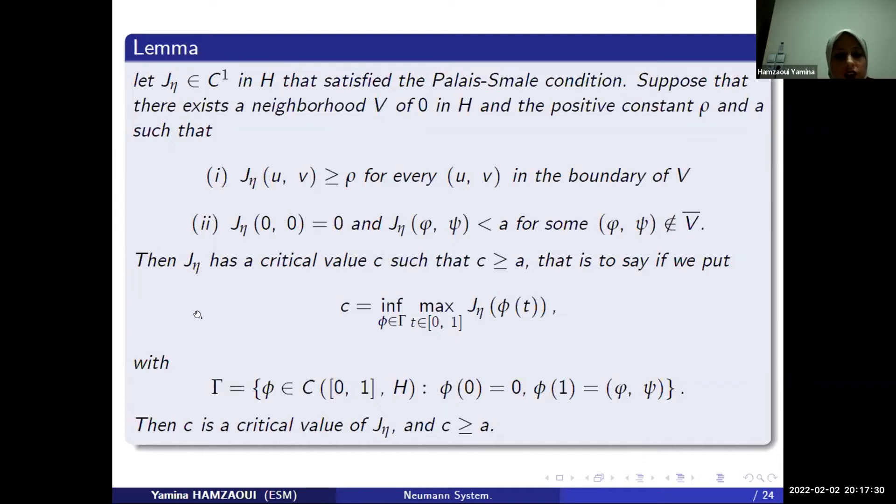Then G eta has a critical value C, such that C is superior to A. That is to say, if we put C equal to the maximum of G eta, with gamma is the path which connects 0 to phi, then C is a critical value of G eta and C is superior to A.